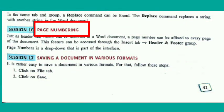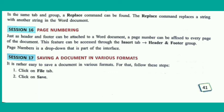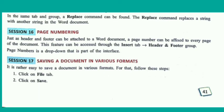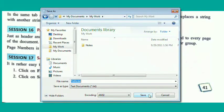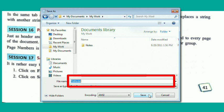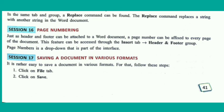Now we'll see how to put page numbers in the document. Just as header and footer can be attached to a document, a page number can be attached to every page. This feature is accessed by clicking on the Insert tab, then going to the Header and Footer group where Page Numbers is a drop-down. To save a document in various formats, click on the File tab, then click on Save As. It will open a Save As dialog box where you write the document name, choose the Save As type, and click Save. The file will be saved with the name and format you entered.